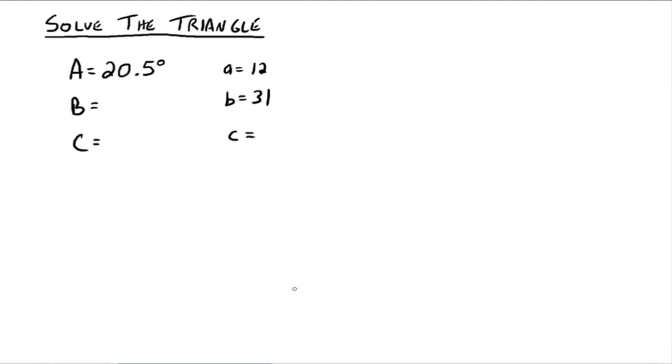We need to find angle B again. So to figure out B, we're going to go up here and say, 12 over the sine of 20.5 degrees is equal to 31 over the sine of B, which implies that the sine of B is equal to 0.9047, rounded off there. And that implies that B is equal to, using your calculator, 64.8 degrees. But that's B1. So what's B2? B2, 180 minus 64.8 degrees would be 115.2 degrees.